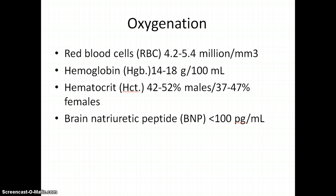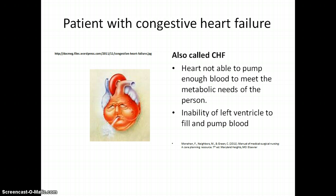We'll start with one of our first units called oxygenation and we look at our red blood cells, hemoglobin, hematocrit, and also the BNP, which is going to be important for this unit.